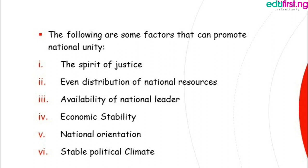Economic stability. When the economy is stable, it promotes national unity. National orientation: the government must always reorientate and re-educate its citizens regularly. Government must regularly embark on public enlightenment, sensitization and activities that will promote the people's views favorably towards their government. Stable political climate. There must be a stable political climate in a country, because when we have a stable political climate, it promotes national unity in the country.